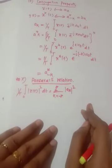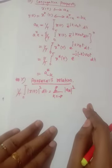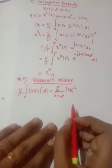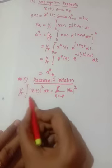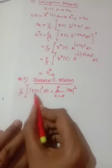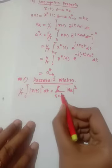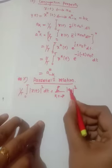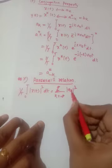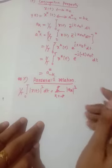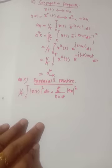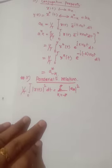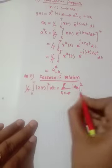The next property is Parseval's relation. This relates the total average power in a periodic signal: the total average power equals the sum of the average power in all of its harmonic components.